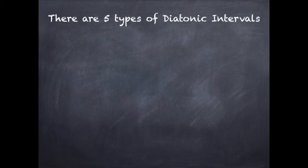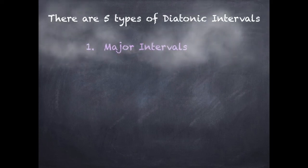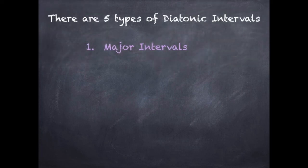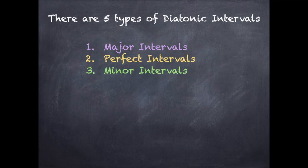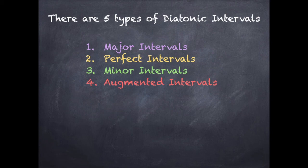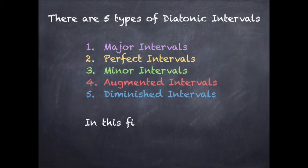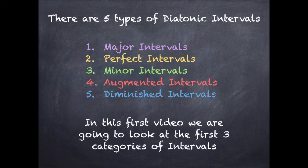There are five types of diatonic intervals: major intervals, perfect intervals, minor intervals, augmented intervals, and diminished intervals. In this first video we are going to look at the first three categories: major, perfect, and minor.